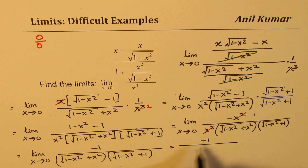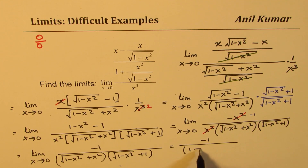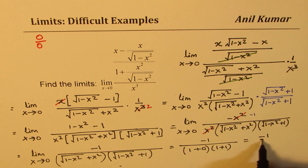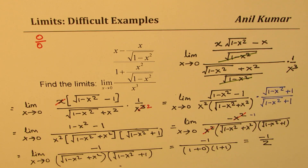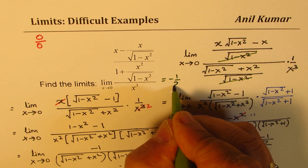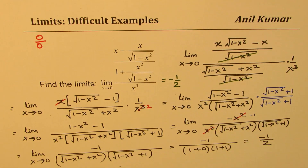Substituting x equals 0, we get minus 1 over the quantity 1 plus 0, times 1 plus 1. That gives minus 1 over 1 times 2, so the answer is minus 1 over 2. The limit of this function is equal to minus half.